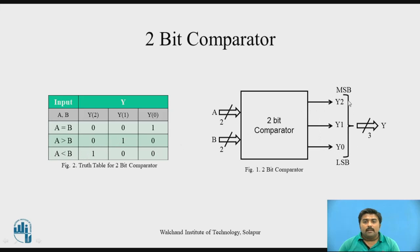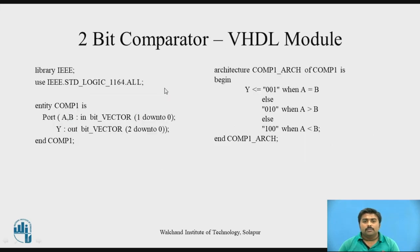So Y is a 3-bit output. Now we know the inputs and outputs of our system, and we know the internal working. Now let's go for the VHDL module. This is the VHDL module created using Xilinx. It is divided into 3 main parts: the first part is the library declaration part, the second part is the entity declaration, and the third part is the architecture declaration.